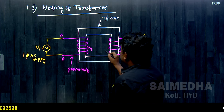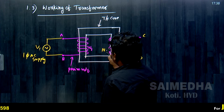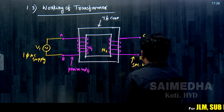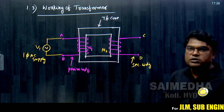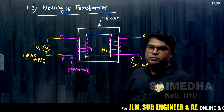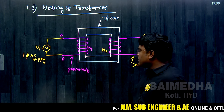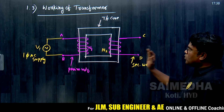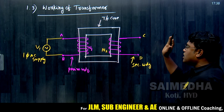The other winding, with terminals C and D, has N2 number of turns and is placed on the other limb of the transformer core. You can call it the secondary winding of the transformer. The winding connected to the supply is known as the primary winding, and the other winding — where the load is connected — is the secondary winding.